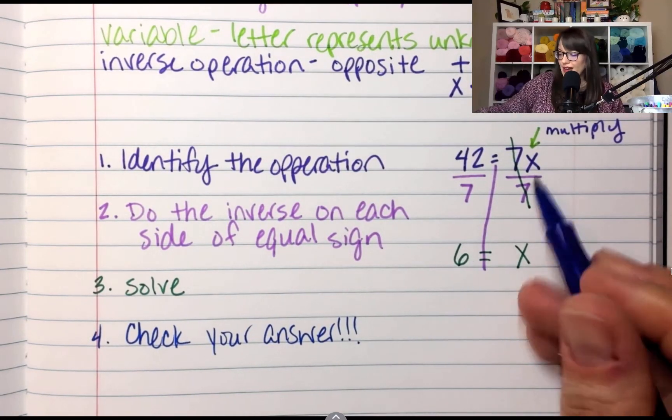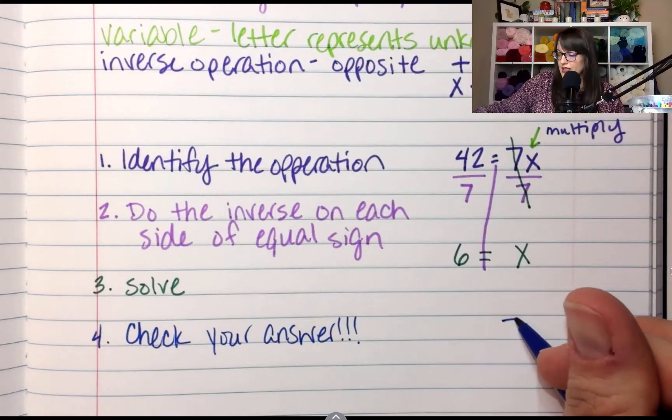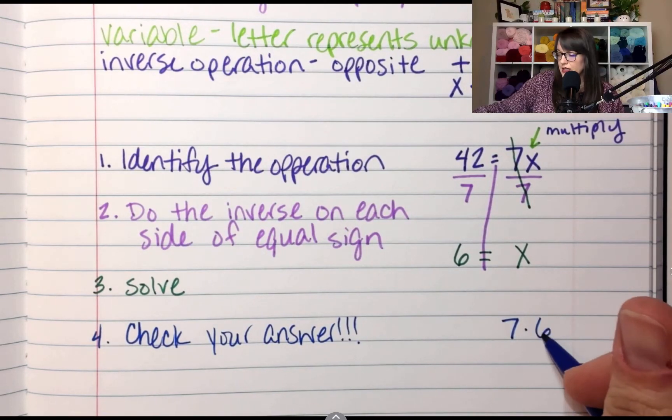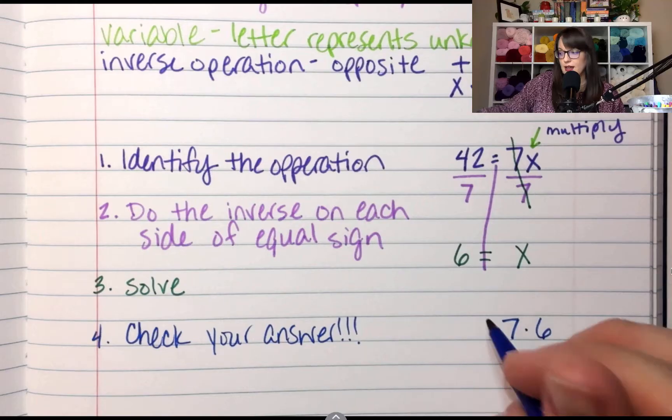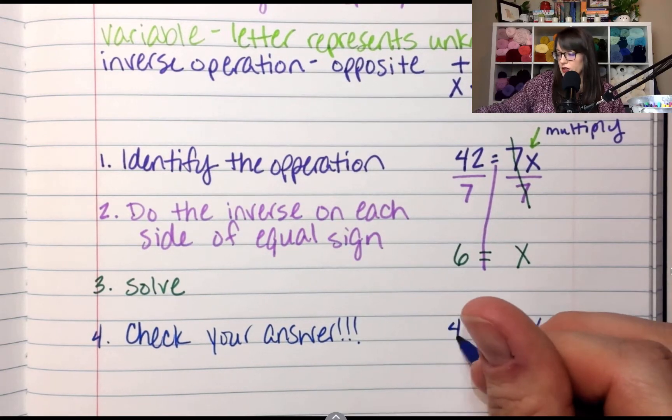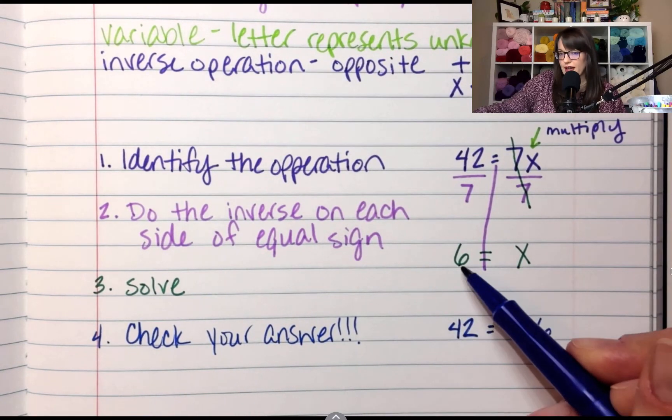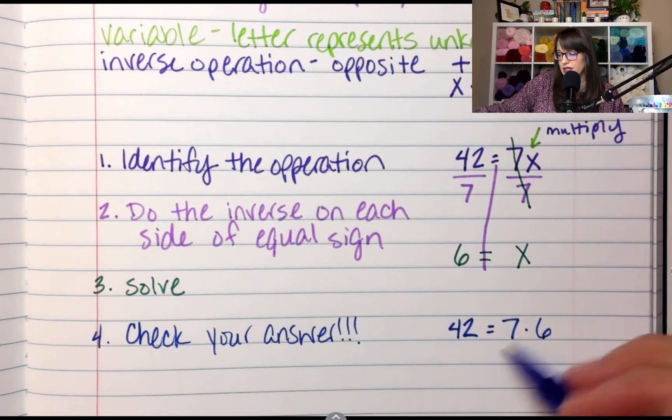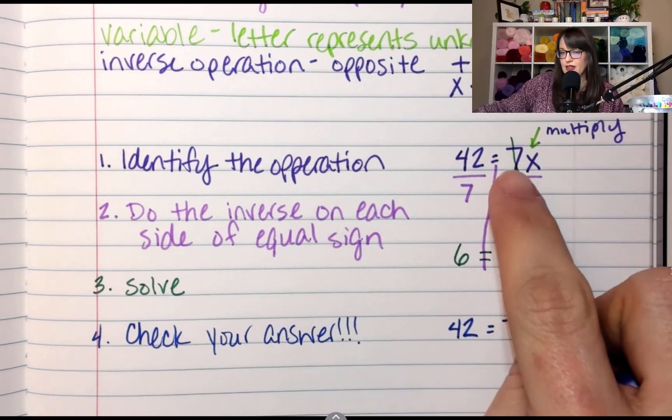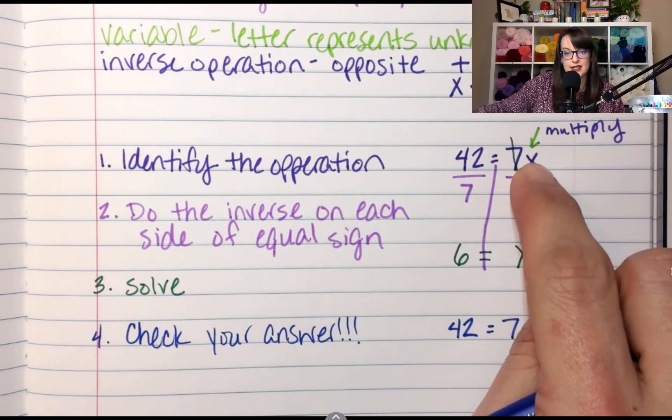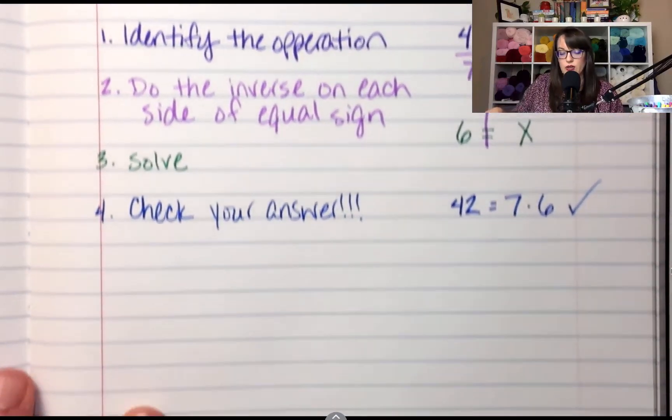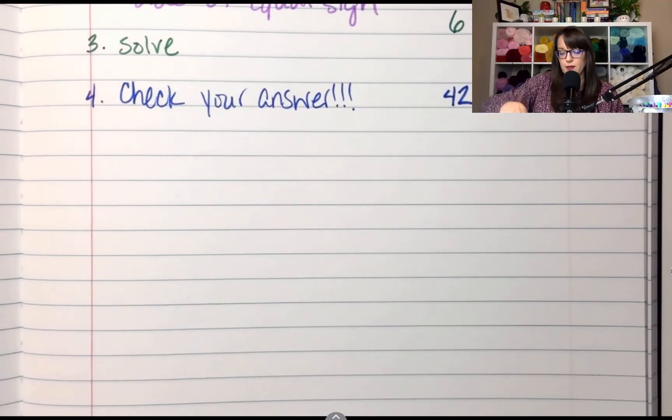So step 4: check your answer. Check your answer, please check your answer. So if X is 6, what is 7 times 6? It is 42. So you plug your X value back into the equation to see if 7 times 6 is 42. All right, let's do some examples.